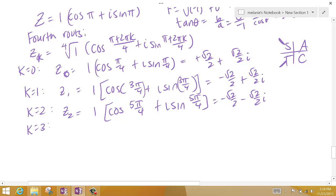And when k is 3, I plug in 3 for this k up here. So I get pi plus 2 pi times 3, so that's 6 pi plus another pi, 7 pi. Cosine 7 pi over 4 plus i sine 7 pi over 4. And I know that's in this quadrant right here, so cosine is positive, and the sine is negative.